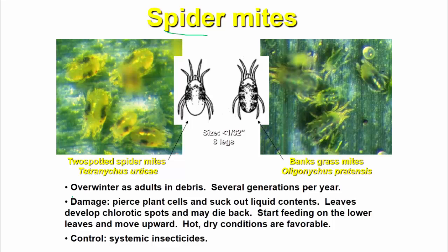Next is spider mites. They overwinter as adults in debris, with several generations per year. They pierce plant cells and suck out liquid. Leaves develop chlorotic spots and may die back. They start feeding on lower leaves and move upward. Hot, dry conditions are favorable. Control is achieved using systemic insecticides.